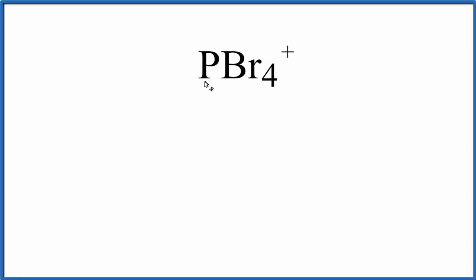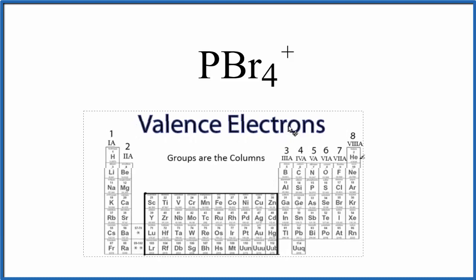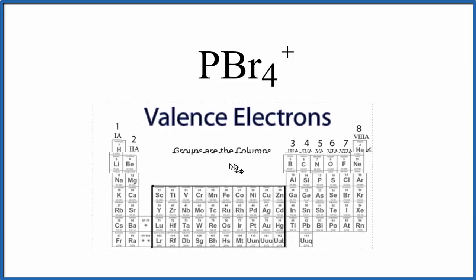In this video, we'll write the Lewis structure for PBr4+. The first thing we need to do is figure out how many valence electrons we have for PBr4+. We can look on the periodic table, and that'll help us figure it out.